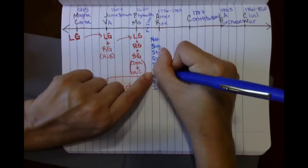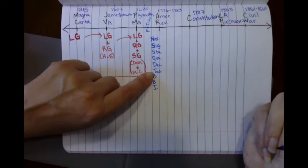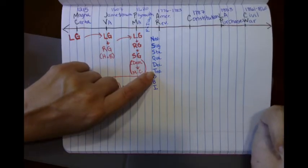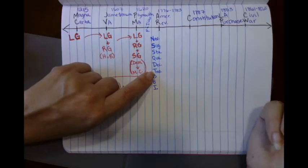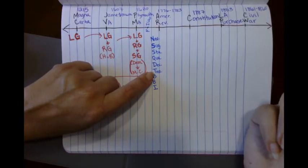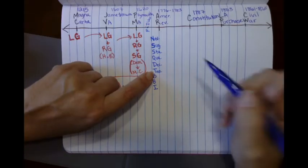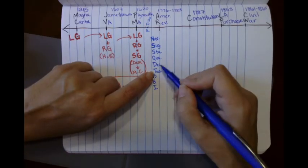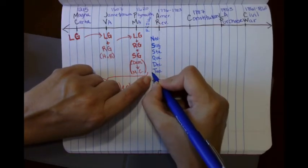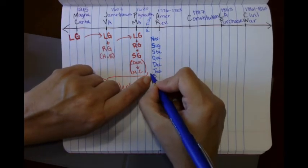Then we get the Townshend Act, which is an indirect tax collected at seaports. A tax on glass, lead, paper, paint, tea, anything coming from England on a ship. The merchants will actually pay it, which causes, what happens at the stores? Then the price is going to go up. So give me a little dollar sign, dollar dollar, for that tax right there.